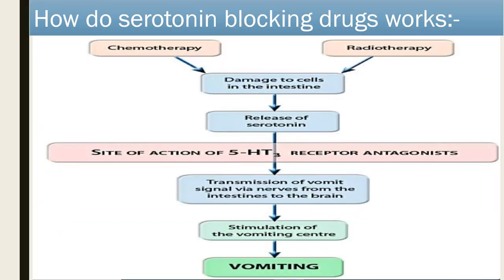The action of serotonin in chemotherapy/radiotherapy-induced nausea: whenever chemotherapy or radiotherapy causes cell damage in the intestine, it causes release of serotonin. This serotonin transmits a vomiting signal to the brain through nerves from the intestine to the brain, stimulating the vomiting center so vomiting occurs. We can introduce 5-HT antagonists which block the 5-HT3 receptor — increasing the vomiting sensation is inhibited by 5-HT3 blockers like ondansetron and granisetron.